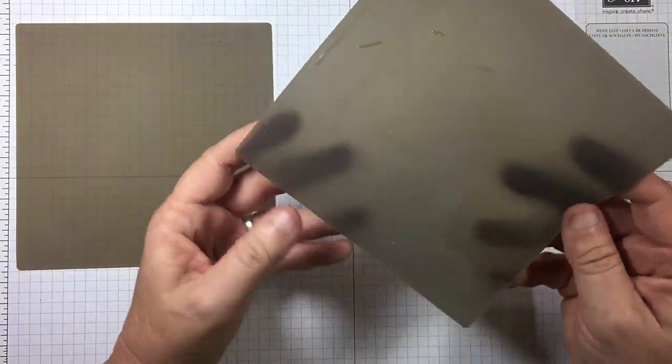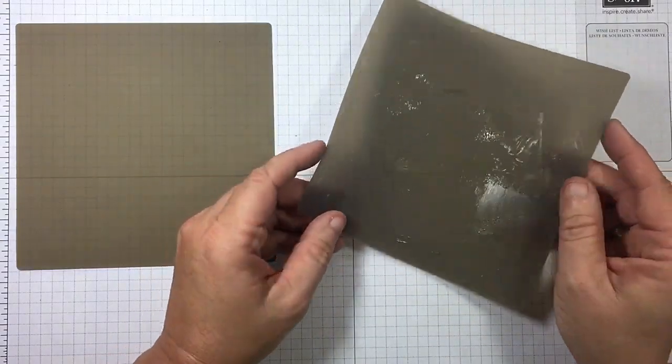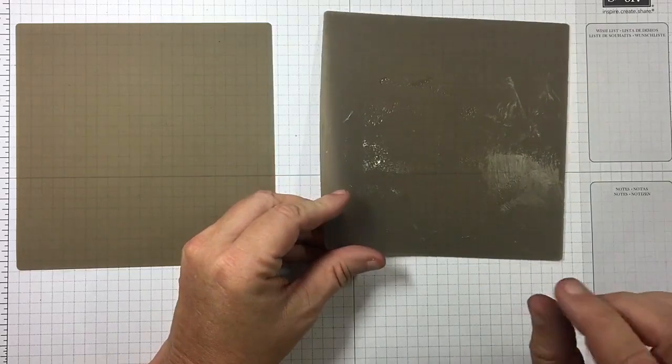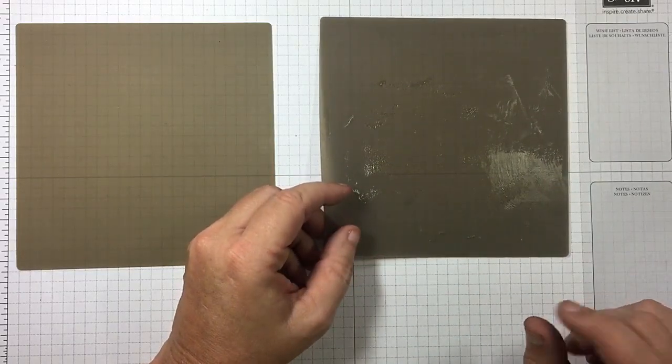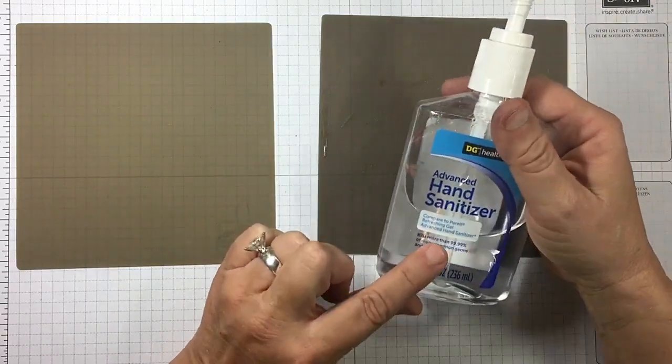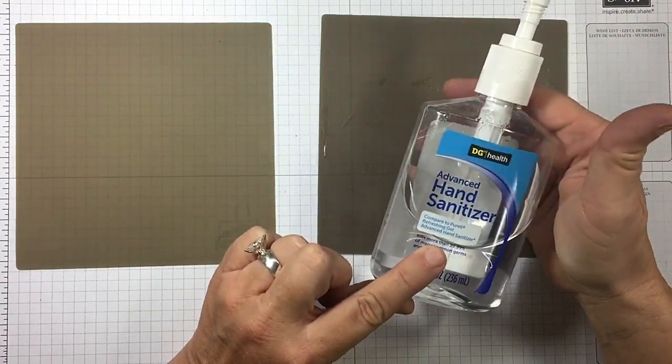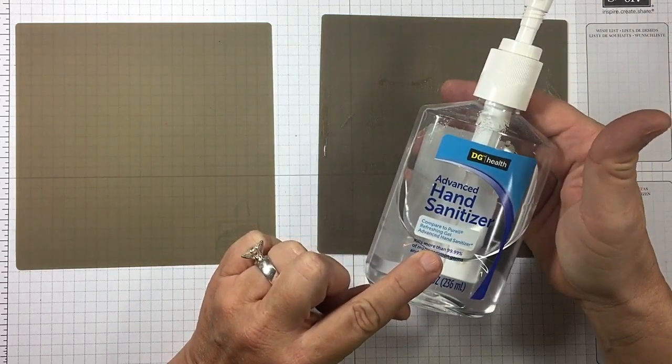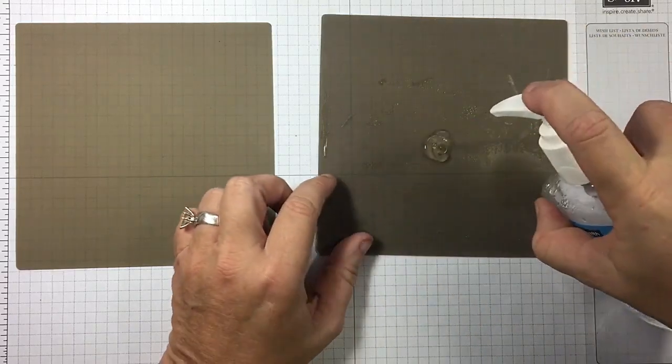And then this one, you can tell I've used my sponge and my Tombo on it. This is how I clean it: I keep just regular cheap hand sanitizer from the dollar store. I just squirt it on there and then massage it in.